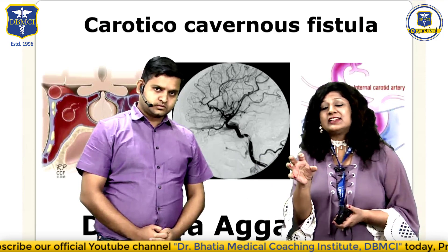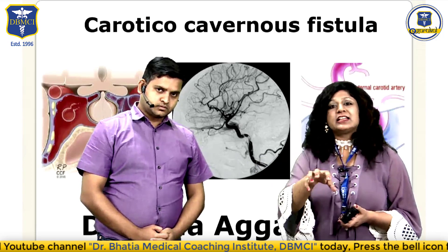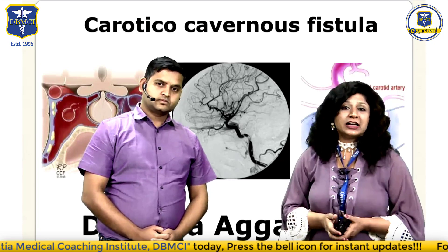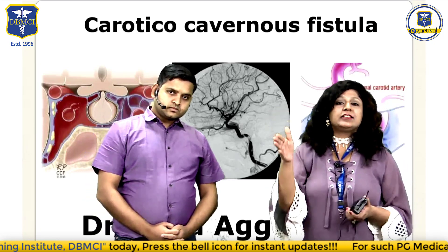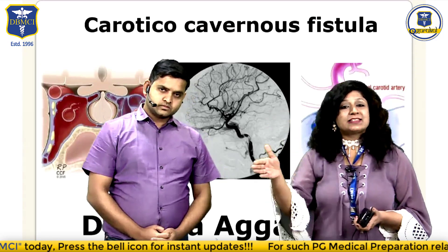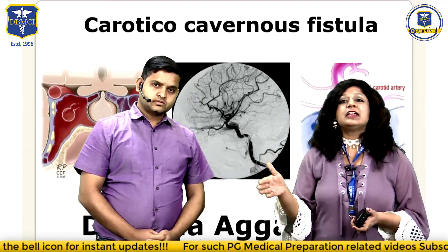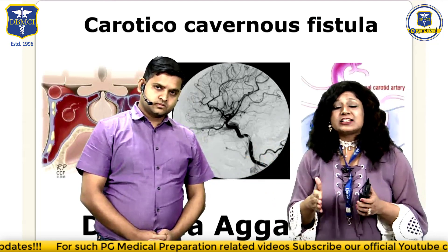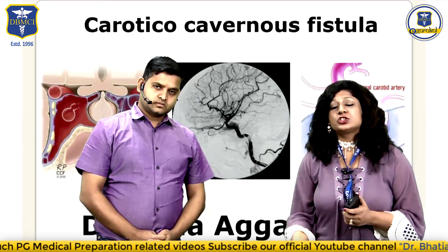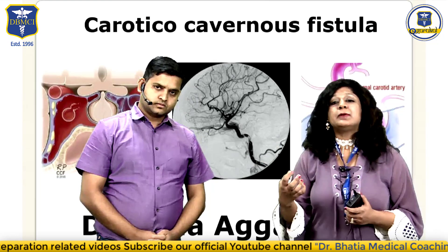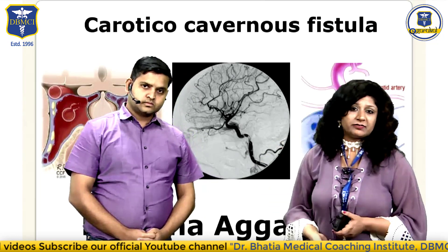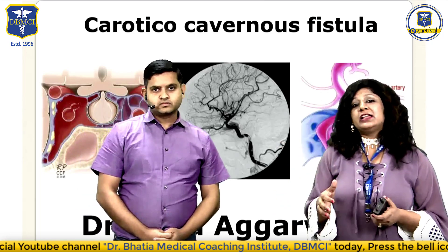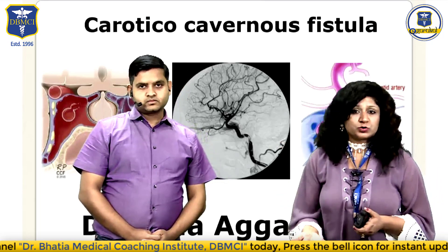The structures draining inside are very important. The central one is the internal carotid artery along with the 6th nerve, and then we have the lateral wall. The lateral wall gives passage to the 3rd nerve, 4th nerve, and the 1st and 2nd division of the 5th nerve. That is why whenever we have arterialization of these vessels, you get increased episcleral venous pressure, and the first important finding you will get is pulsatile proptosis.